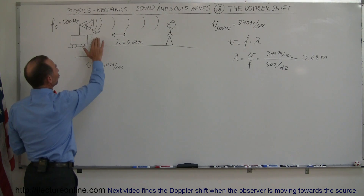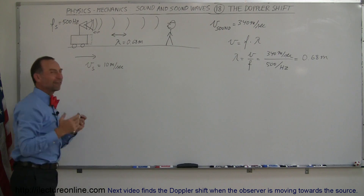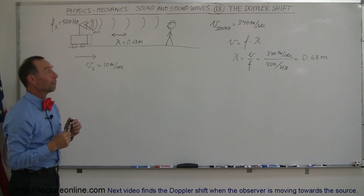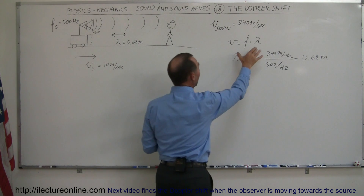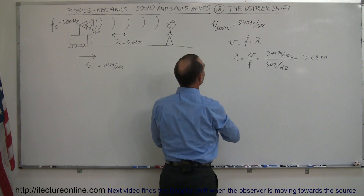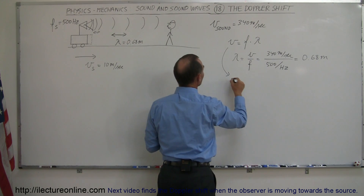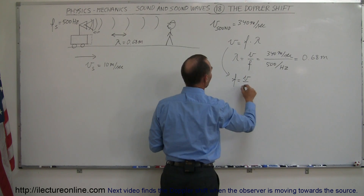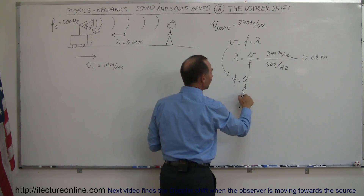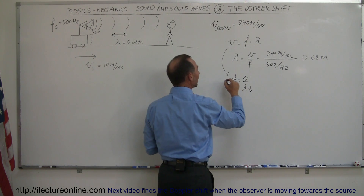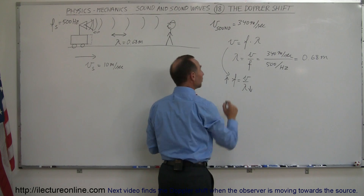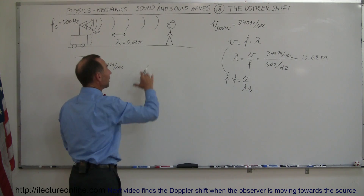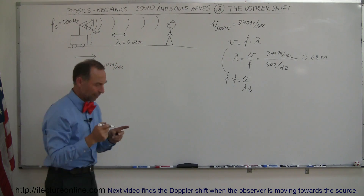With a shorter wavelength, the frequency actually goes up. Going back to the equation and solving for frequency: frequency equals velocity divided by wavelength. If the wavelength becomes smaller, the frequency increases, and therefore the observer will hear sound at a higher frequency.